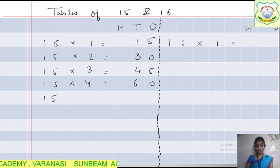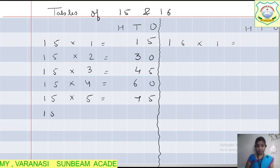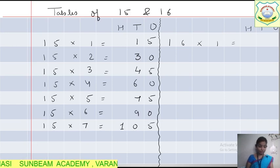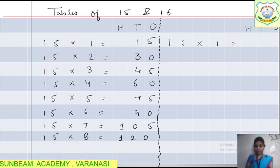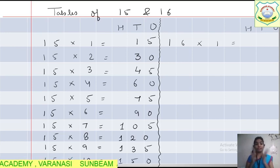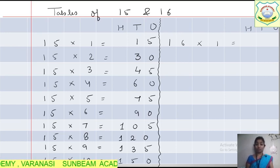You have to learn up to the 20 times table. 15 fives are 75. 15 sixes are 90. 15 sevens are 105 — so 1 goes in the 100s column. 15 eights are 120. 15 nines are 135. 15 tens are 150. Whenever there are 3 digits, use the 1s, 10s, and 100s columns. That is the complete table of 15.